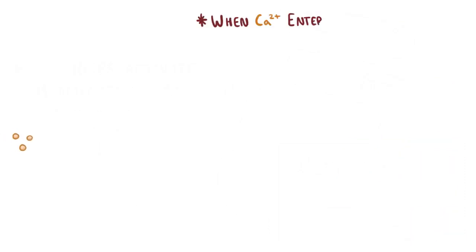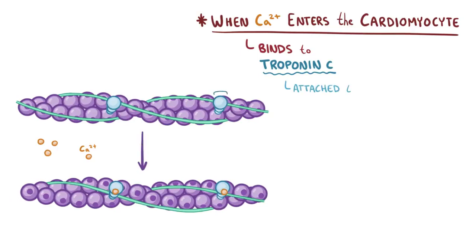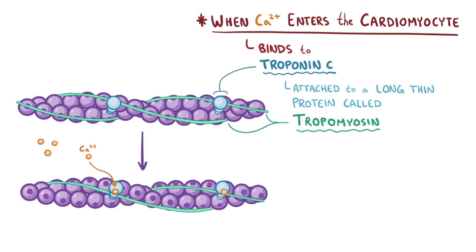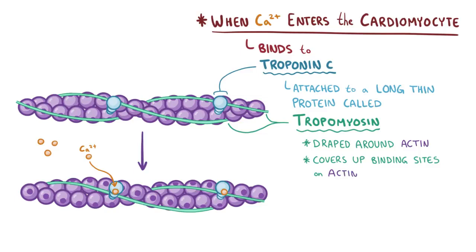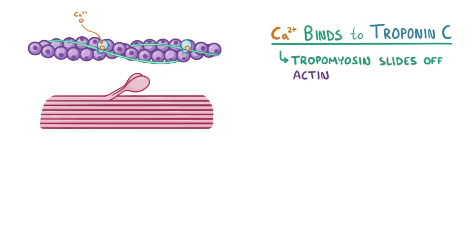When calcium ions enter the cardiomyocyte, they bind to troponin C, which is attached to a long thin protein called tropomyosin. Tropomyosin is draped around yet another protein filament called actin, where it covers up binding sites so that the actin can't be bound by myosin heads which are lurking nearby. This is kind of like a protective parent that doesn't want their child to go out on a date. Those calcium ions bind to troponin C, and that causes tropomyosin to slide off the actin filament, exposing the actin binding sites.